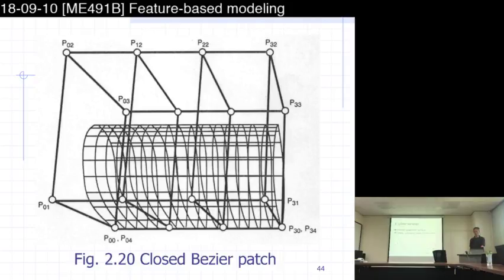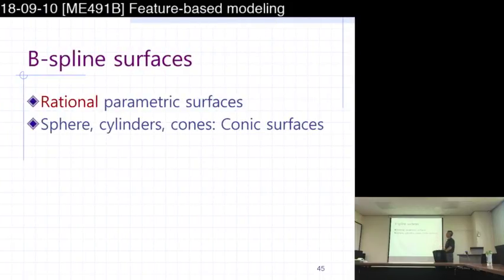So NURBS is important. B-spline. Rational parametric surface. So we already jumped into rational B-spline. And then we can model quadric surfaces like, say, here, cylinder. Using rational B-spline. Perfect.